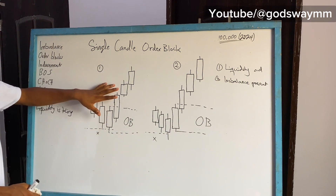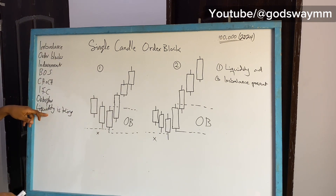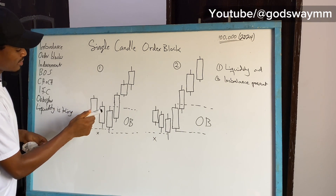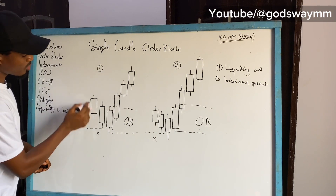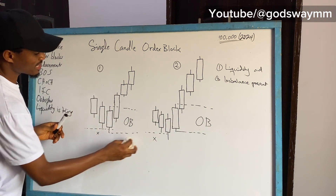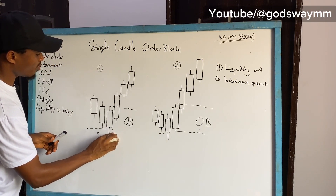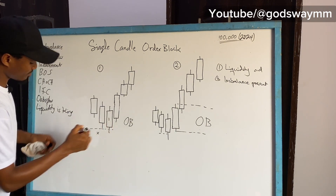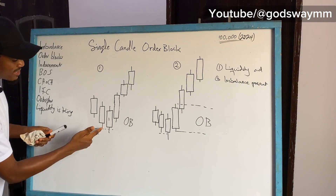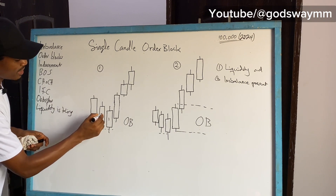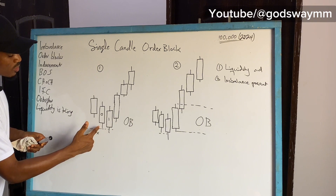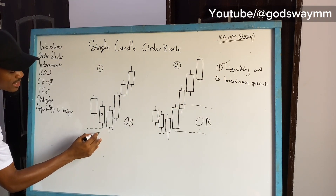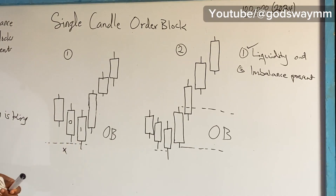Liquidity is king here. Looking at diagram one, we have a candle moving downward and then price starts moving up. I'll name the candles: candle zero and candle one. Candle one moved down and came below candle zero — that means it took out liquidity, which I've represented with an X. So the first condition has been met: liquidity has been taken out.